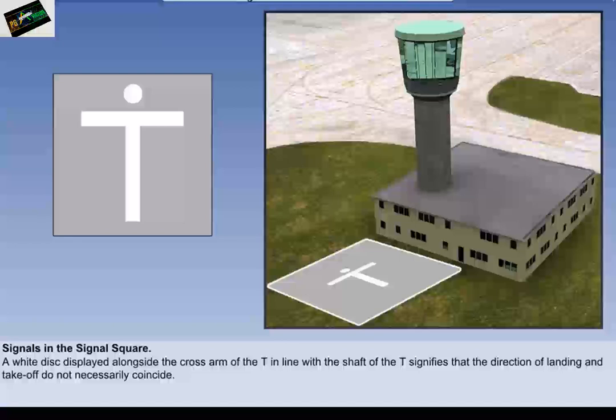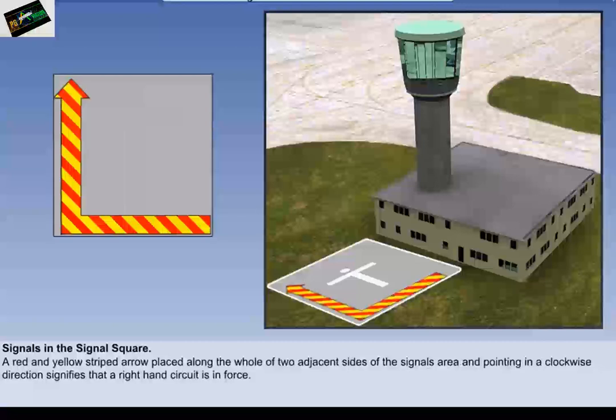A white disc, displayed alongside the cross arm of the T in line with the shaft of the T, signifies that the direction of landing and take off do not necessarily coincide. A red and yellow striped arrow, placed along the hole of two adjacent sides of the signal's area and pointing in a clockwise direction, signifies that a right-hand circuit is in force.